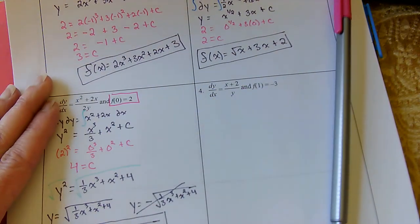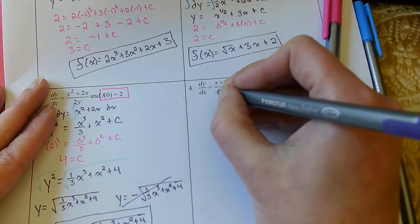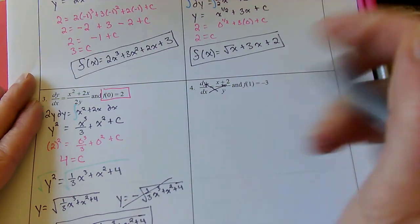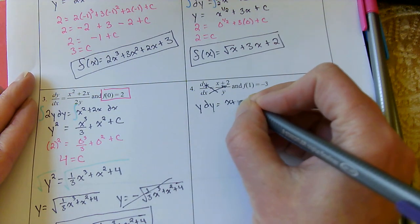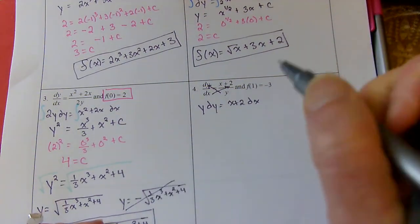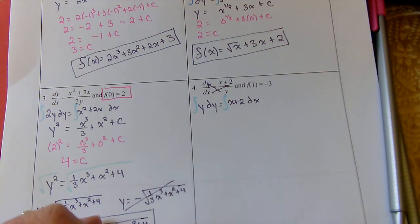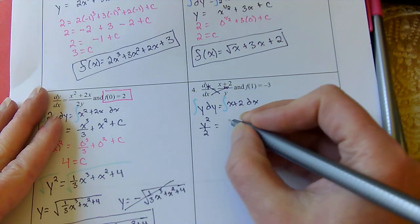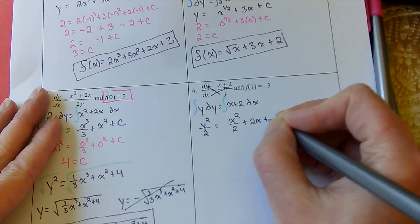Let's try the next one. We want to get all the y's on one side and all the x's on the other. So it's going to end up being something like this — this one goes there and this one goes there. So I'd have y dy equals x plus 2 dx. To undo the derivative, we're going to take the integral of both sides. The integral of y would be y squared over 2. And this would be x squared over 2 plus 2x plus c.